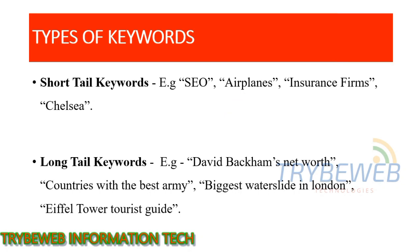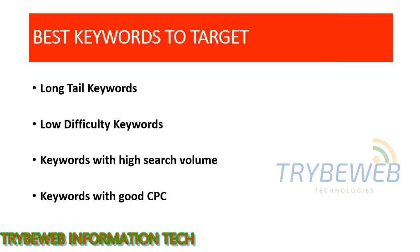Long tail keywords involve a combination of three or more words. Examples: David Beckham's net worth, Countries with the best army, Biggest water slide in London, Eiffel Tower tourist guide. The best keyword combination to target depends on how old your website is and how good your SEO is. For new websites, I recommend targeting long tail keywords with low difficulty, high search volume, good CPC, and most importantly, keywords that are relevant to your niche.